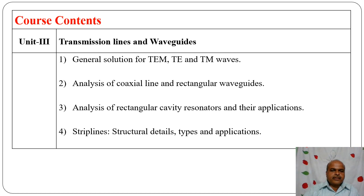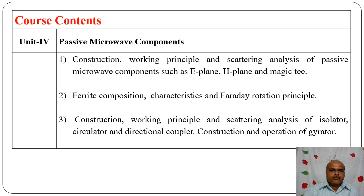We also study strip lines — different structures, details, types, and applications. Chapter four covers passive microwave components: construction, working principle, and scattering analysis of E-plane T, H-plane T, and magic T. Then ferrite components — characteristics and Faraday's rotation principle. Isolator, circulator — all these operate on the Faraday rotation principle. Construction, working principle, and scattering analysis of isolator, circulator, directional coupler, and construction and operation of gyrator.